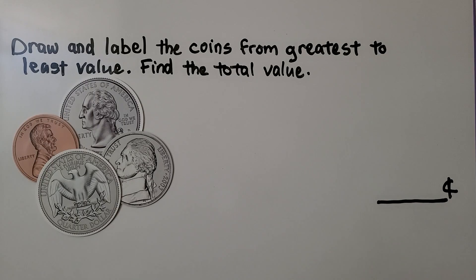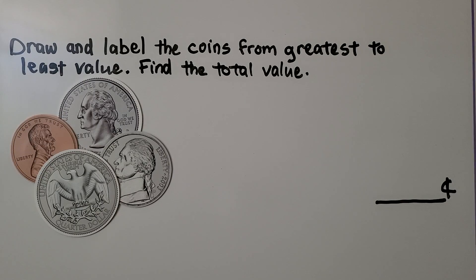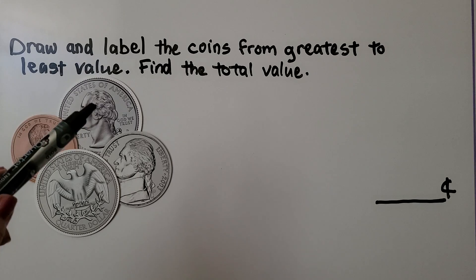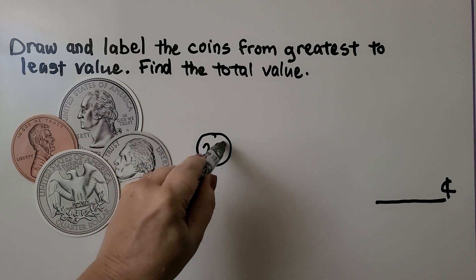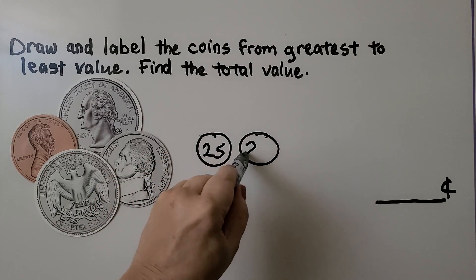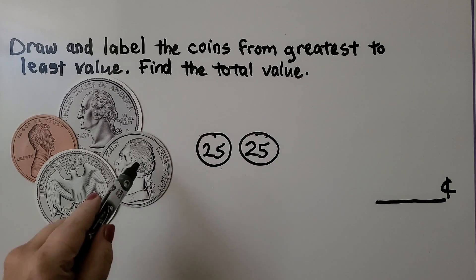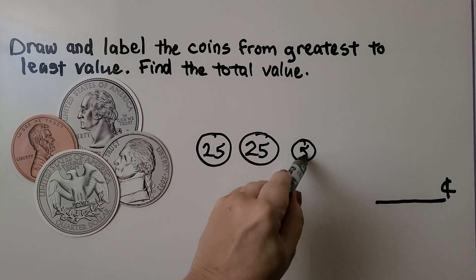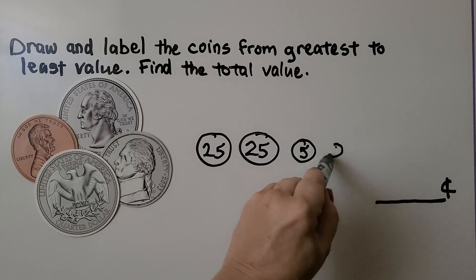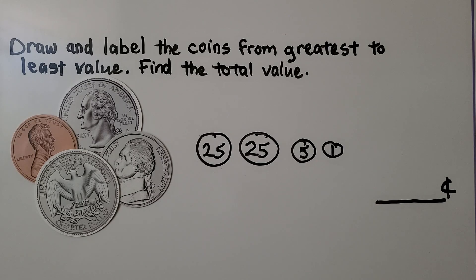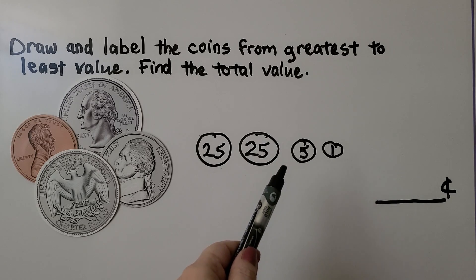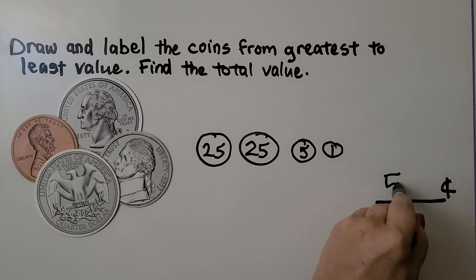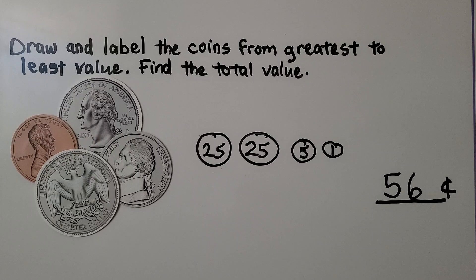Here's a collection of coins. It's telling us to draw and label the coins from greatest to least value, then find the total value. I see a quarter here and a quarter here, so we have 2 quarters — we can draw and label them as 25 and another 25. Then I see a nickel, that's 5 cents, and I see 1 penny. Now we can find their total value: 25 and 25 is 50, 5 more would be 55, and 1 more would be 56. This collection of coins is 56 cents.